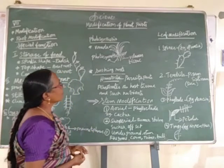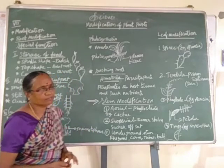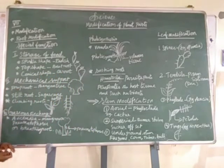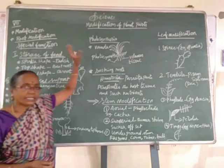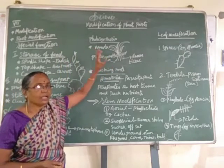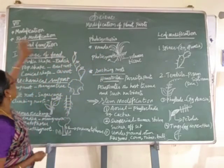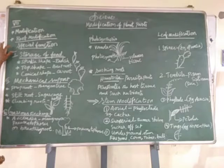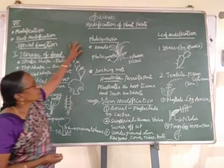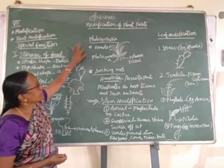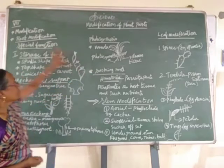We learn about modification of plant parts. Modification is performed to carry out special functions other than the normal functions. Root, stem, and leaves externally modify themselves according to the environment. Root modification includes special functions such as storage of food, mechanical support, gaseous exchange, photosynthesis, and sucking roots.